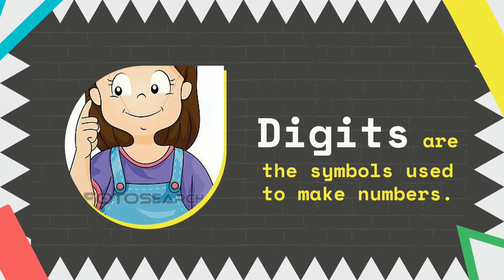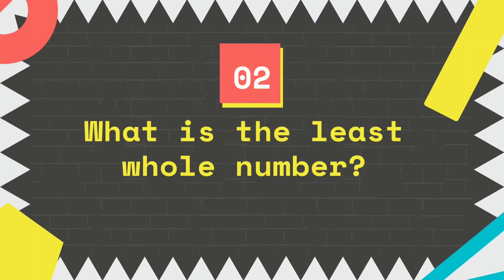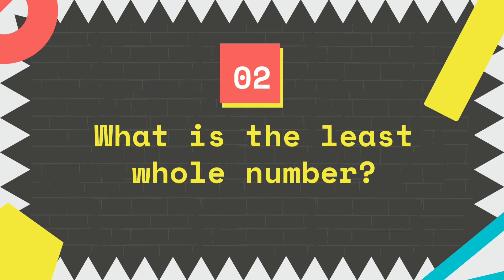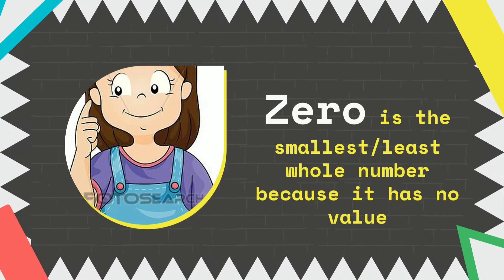Always remember that digits are the symbols used to make numbers. Number 2: What is the least whole number? That's 0. Zero is the smallest or least whole number because it has no value.